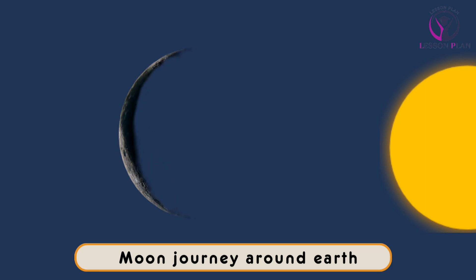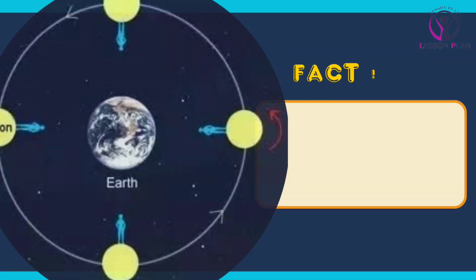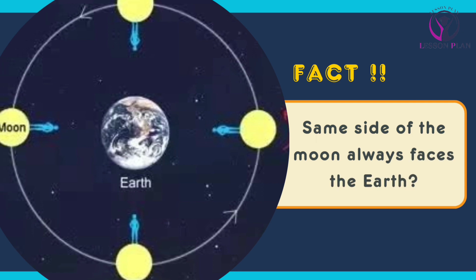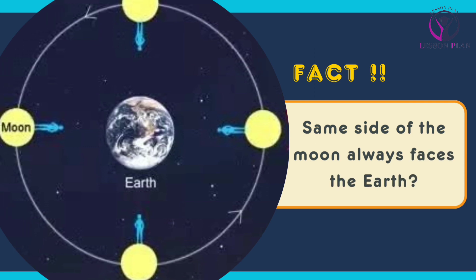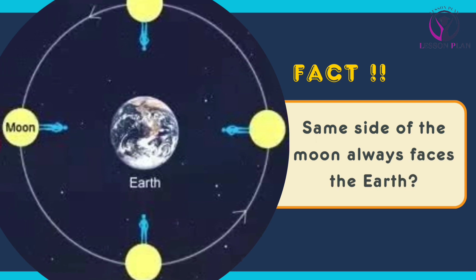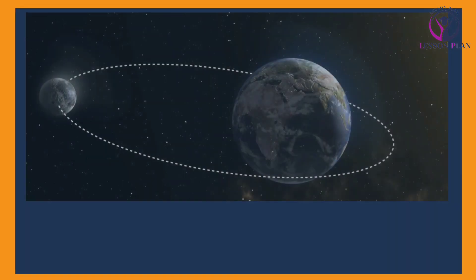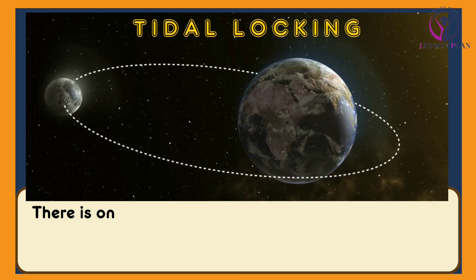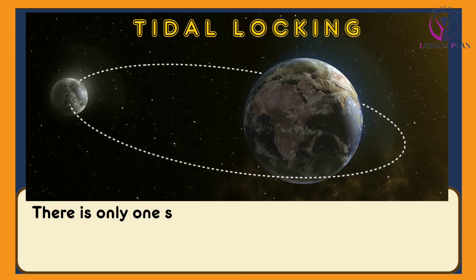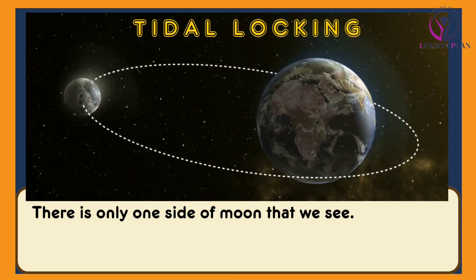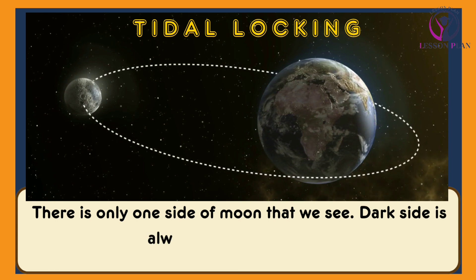There is one more fascinating fact about the moon that makes it even more special. Did you know that the same side of the moon always faces the earth? It's true — even though the moon is constantly moving in its orbit, the same side of the moon is always facing us, while the other side, the so-called dark side, is always facing away.